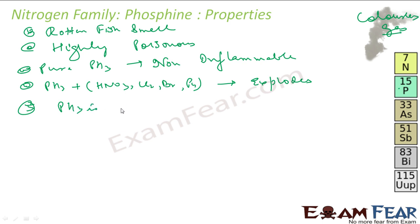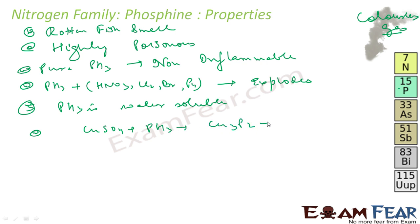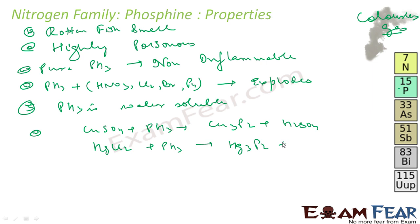PH3 is slightly water soluble. When you absorb PH3 in copper sulfate or mercuric chloride solution, phosphides are obtained. For example, absorbing PH3 on copper sulfate gives Cu3P2 and sulfuric acid. Similarly, absorbing PH3 in HgCl2 gives Hg3P2 and hydrochloric acid. You can write the balanced reaction for these.